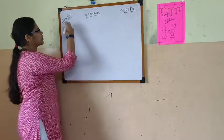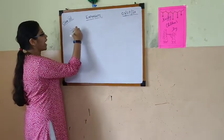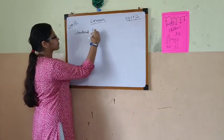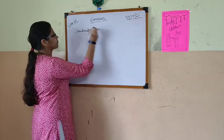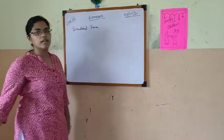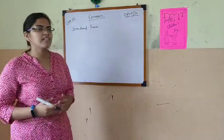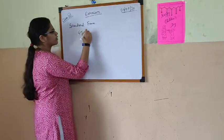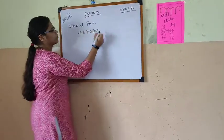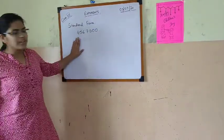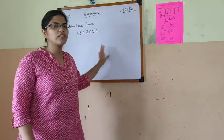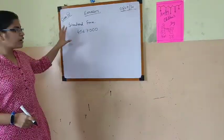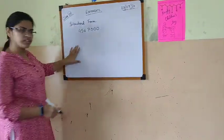So at first I will try to say what is a standard form. Standard form means, suppose there is a number 4,567,000. So as we can see that this number is not written in an exponential form. So we will convert this into exponential form.